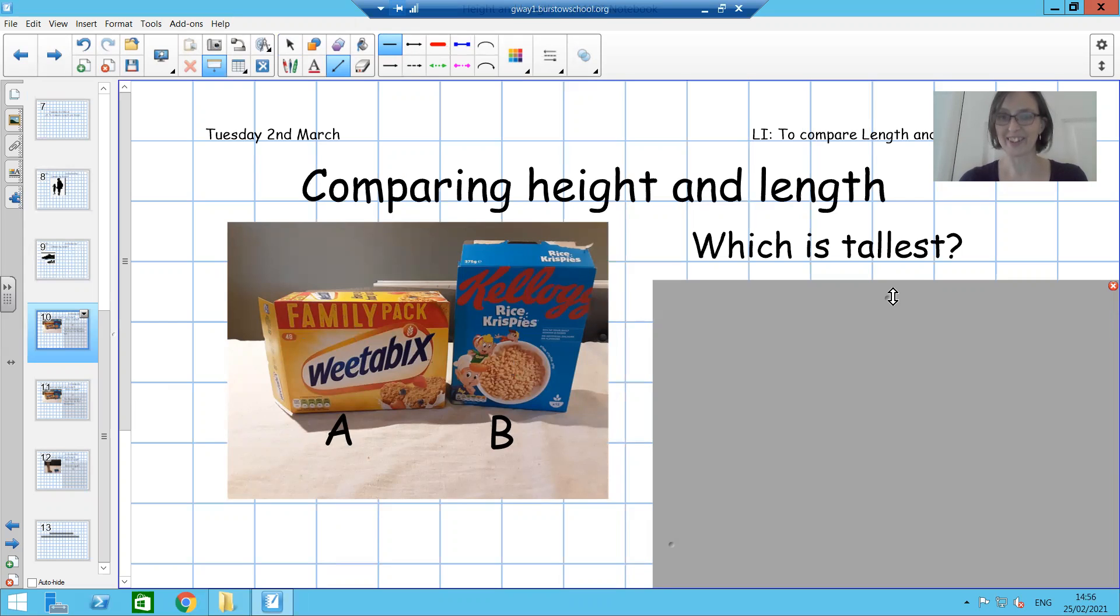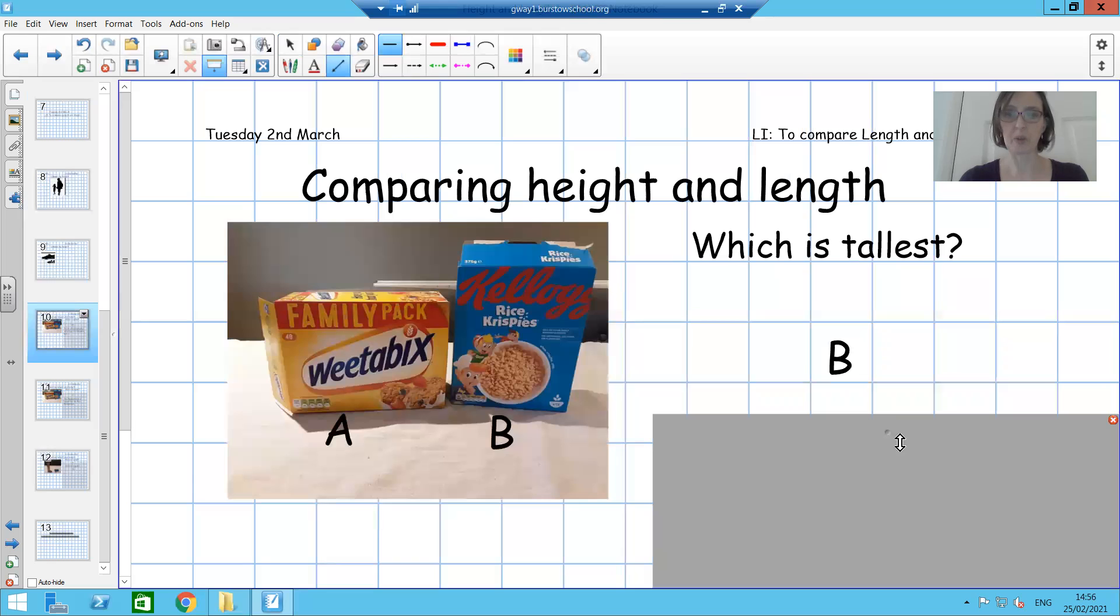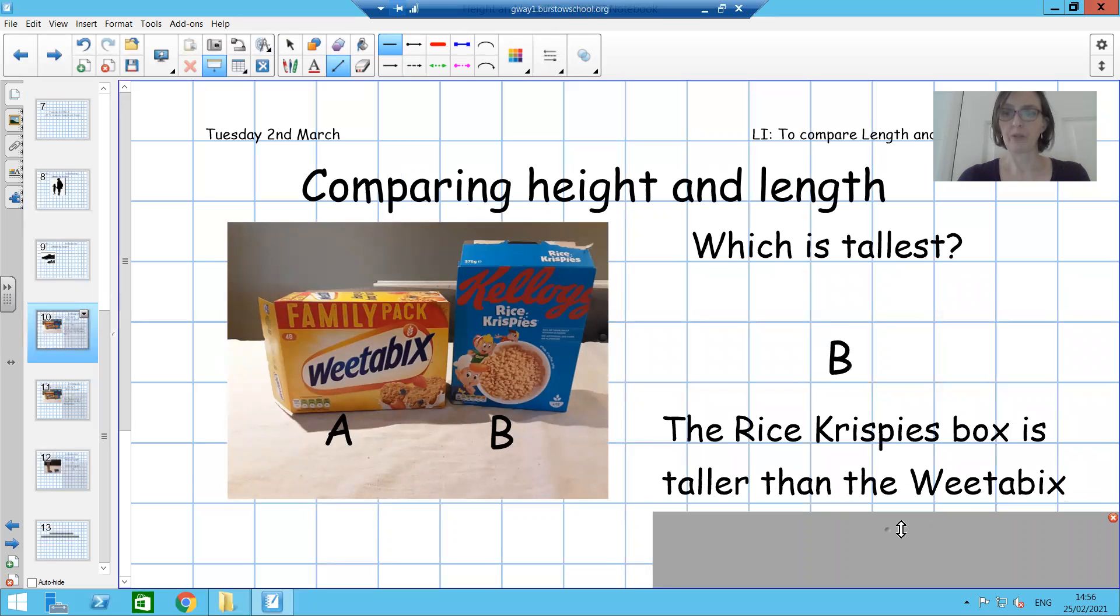Right, let's see. Did you get it right? Did you say B is the tallest? Or you could have written something like the Rice Krispies box is taller than the Weetabix. The Rice Krispies box goes up that high. The Weetabix box is only that high, isn't it? So well done if you got that correct.